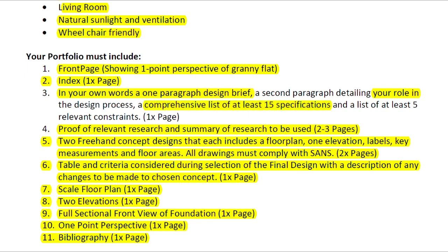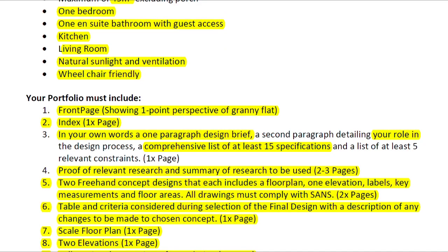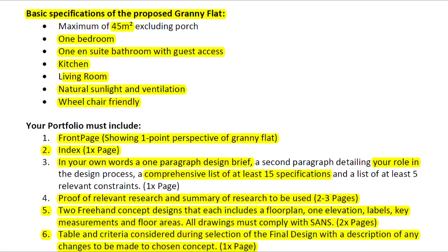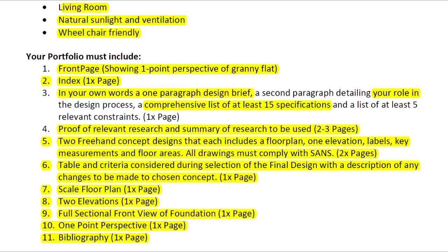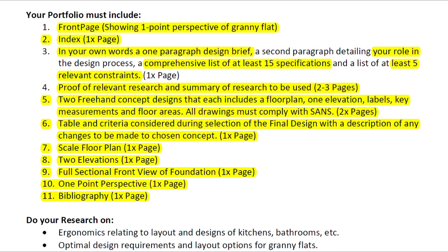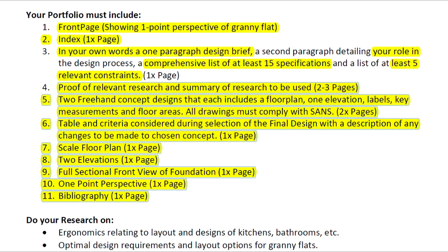You need a comprehensive list of at least 15 specifications. You already have about seven given to you, so you need to come up with eight new ones — elaborations on the existing ones or new ones entirely, such as specifying non-slip tiles or carpets in the living room. You also need a list of at least five constraints restricting your design.